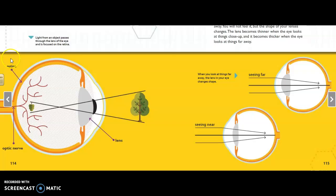We've got the retina. That's what it was talking about when it was talking about the retina. The optic nerve. The lens. And here I see how that image is upside down. It says, when you look at things far away, the lens in your eye changes shapes. Here's what it looks like seeing far away and seeing near.